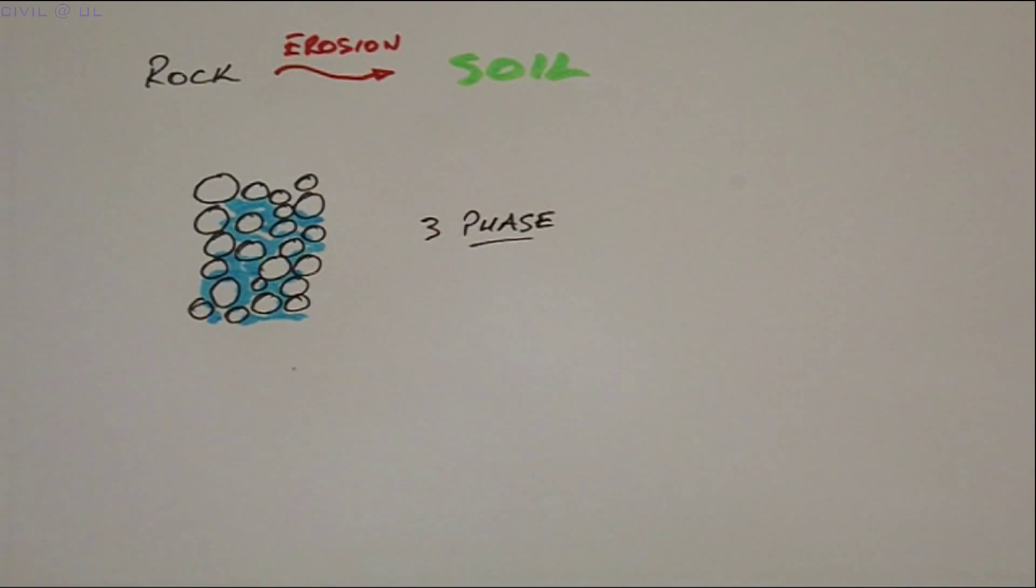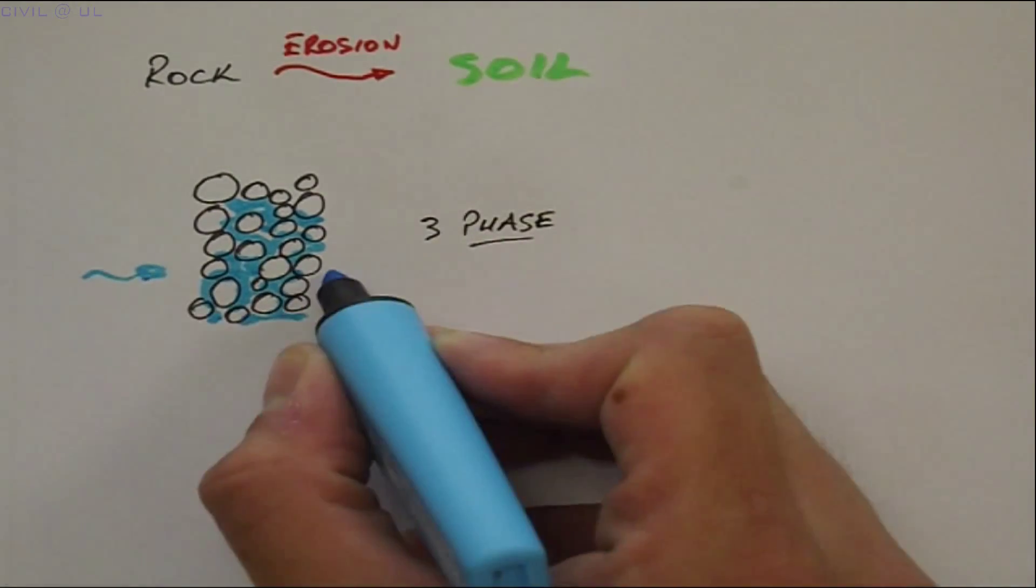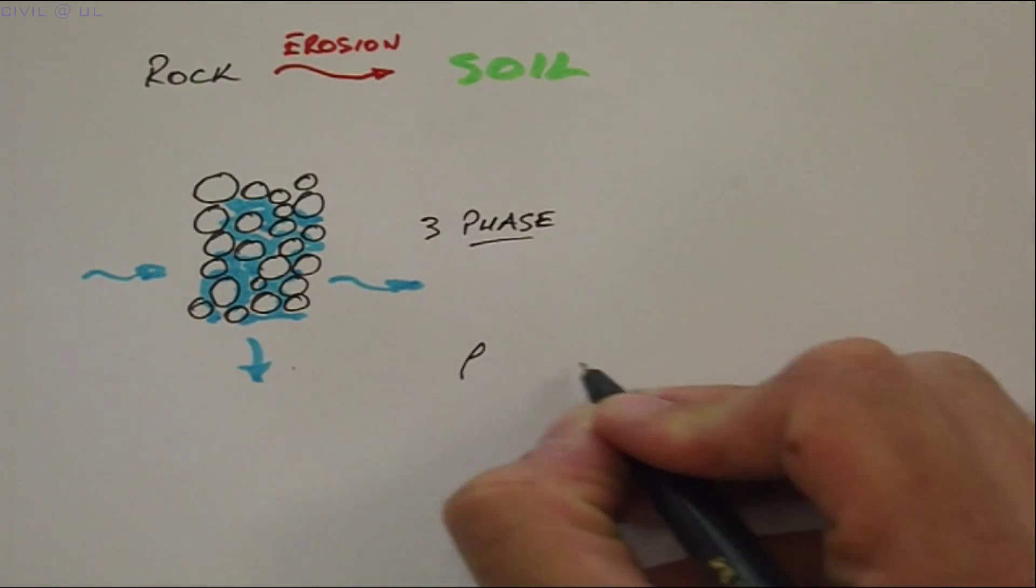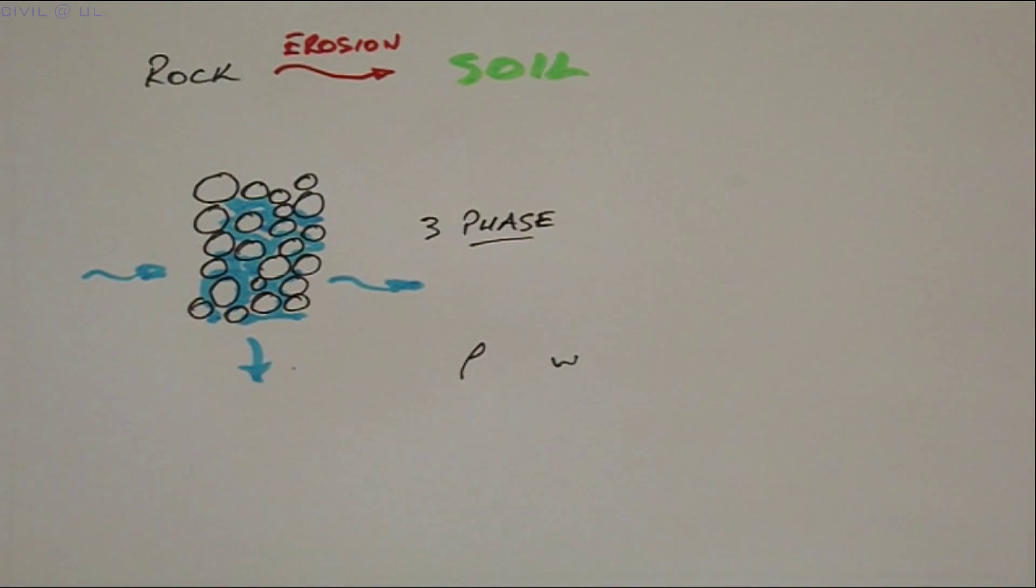Also, being porous, water can enter and leave the soil at any time, so its density and moisture content are variables. Let's look at how these can vary.